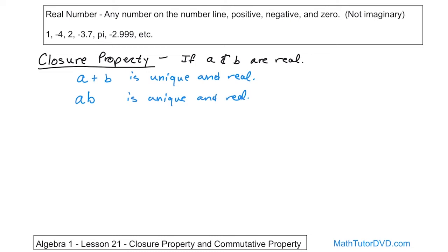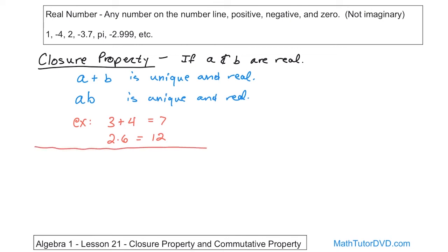Let me write some quick examples. If you take 3 plus 4, you're going to get 7. There's only one answer there, and it's a real number because the things you started with are real numbers. 2 times 6 — there's only one answer, and it's the number 12. The number 12 is the unique answer; the only one that works for 2 times 6, and it's a real number as well. So that's the closure property. You may be asked on a test what the closure property is, and now you know.